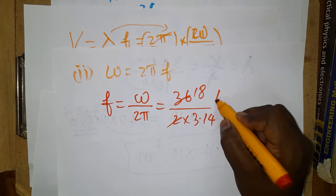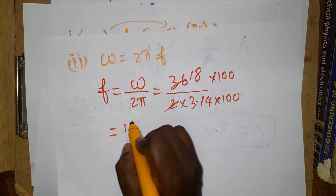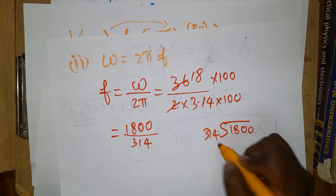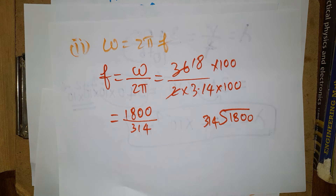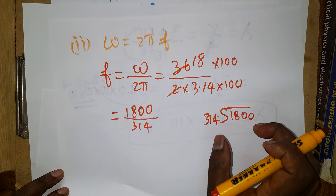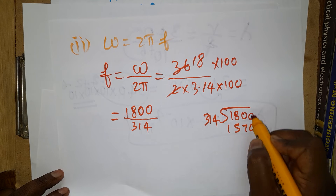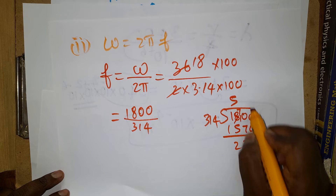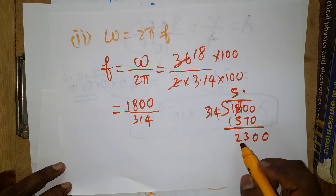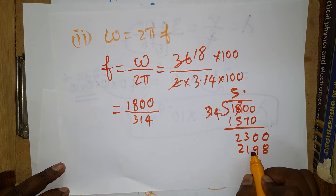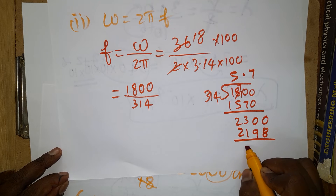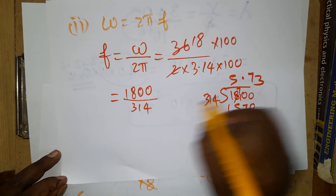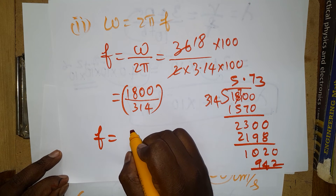Calculating f = 36/6.28. Multiplying numerator and denominator by 100 gives 3600/628. Performing the division: 3600 ÷ 628 ≈ 5.73. So the frequency is approximately 5.73 Hz.